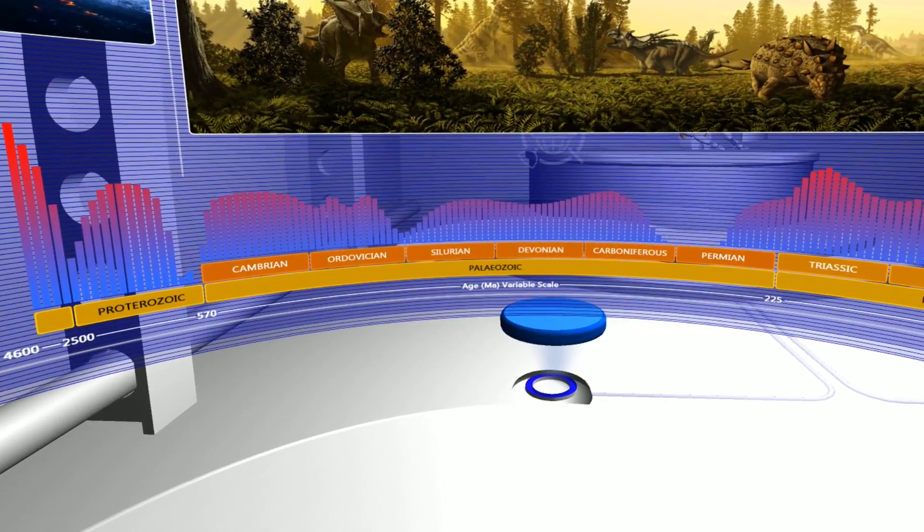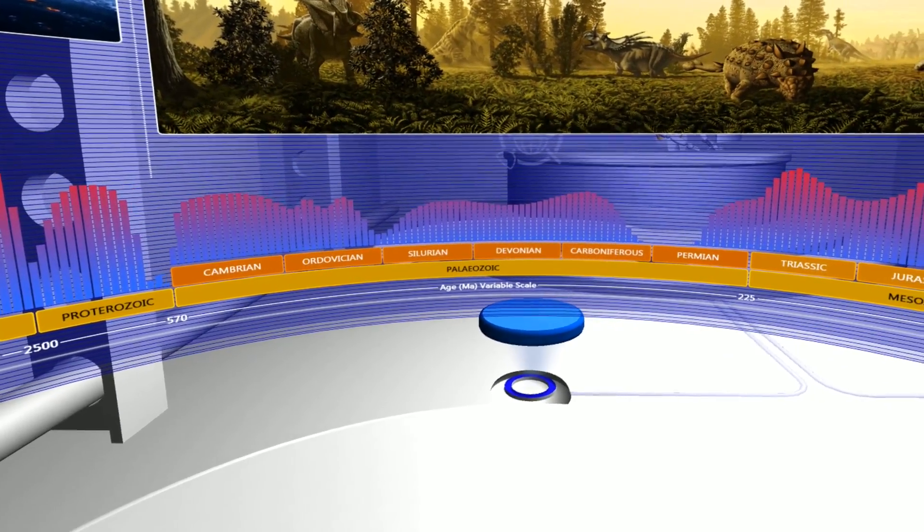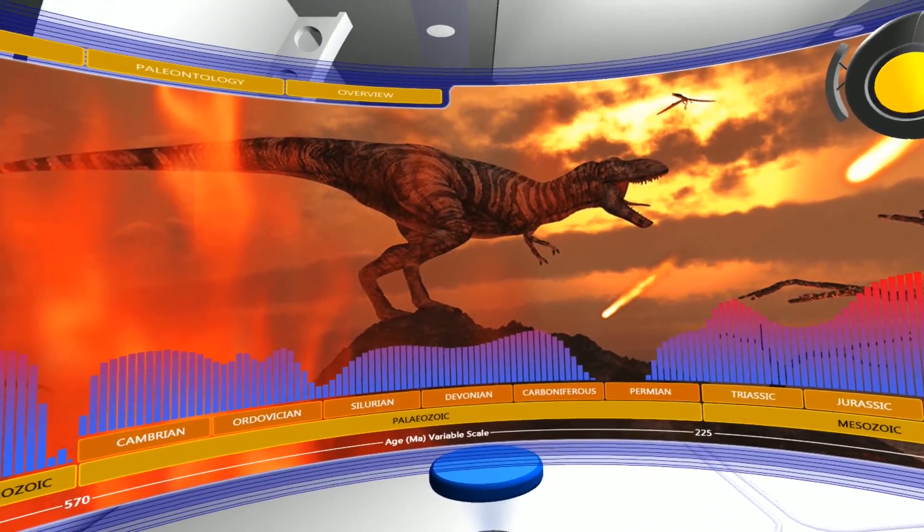A valuable lesson that history has taught us repeatedly is that species domination is directly linked to its environmental impact.